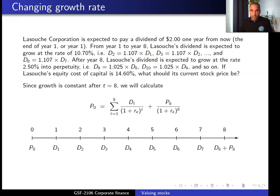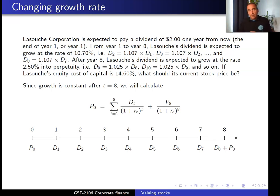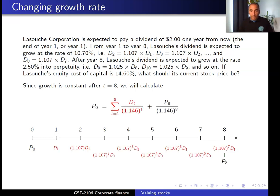Once we have calculated all these numbers, we will be able to find the stock price of the company today. There could be different strategies — you could also compute the first seven dividends and the price at time seven — but since the question states the growth rate will be 10.7 percent during the first eight years, we use the number eight from the question and compute values up to time eight. At time eight we have D8 plus P8.